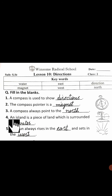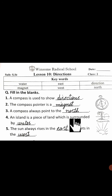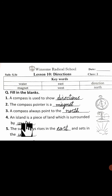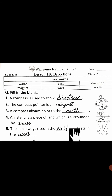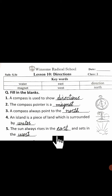Number four: An island is a piece of land which is surrounded by water. Number five: The sun always rises in the east and sets in the west.